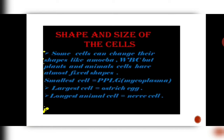Some cells can change their shape. As we already know, amoeba has pseudopodia and it can change its shape. Plants and animals also have certain cells which have fixed shapes. There are WBC, white blood cells, which are animal cells and can change their shape.